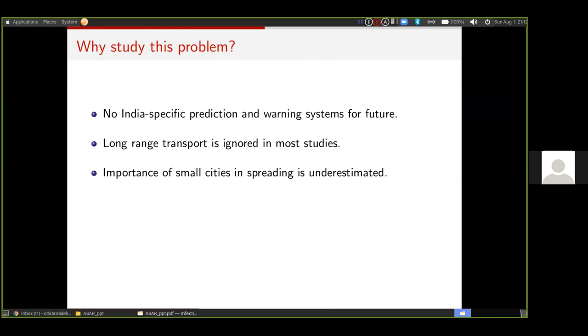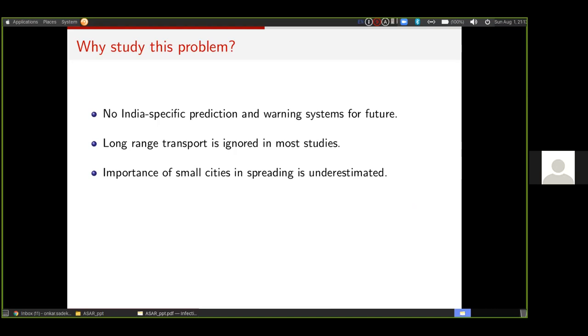However, when we did quite an extensive literature review, we found these three things which were lacking very drastically from India-specific models. First, there was no India-specific prediction and warning system for the future. Most studies considered just the case load for COVID-19 and were not specific about what can we do if such a thing happens in the future. Second, long-range transport was mostly ignored. Even if the studies did consider transportation, it was like a short scale, like people can travel between adjacent districts, but that's not really an accurate description.